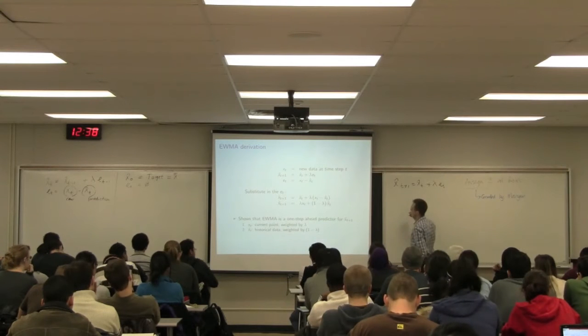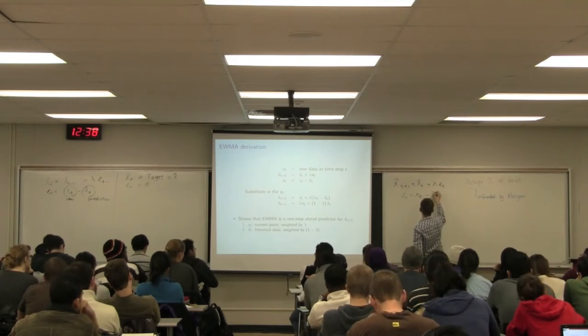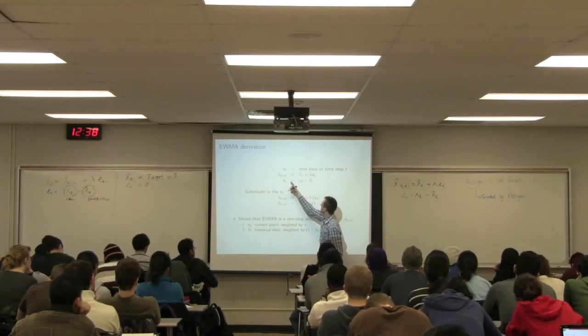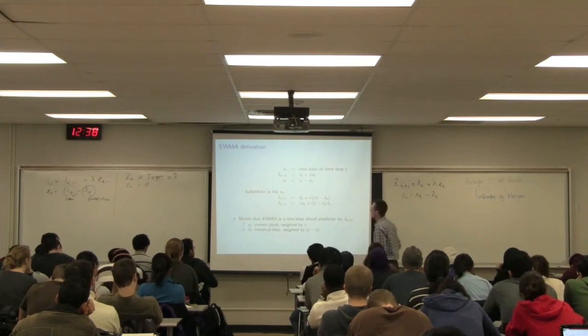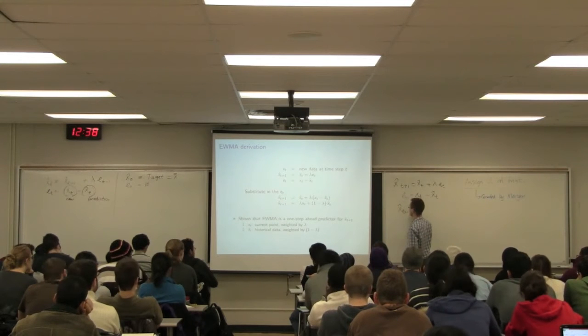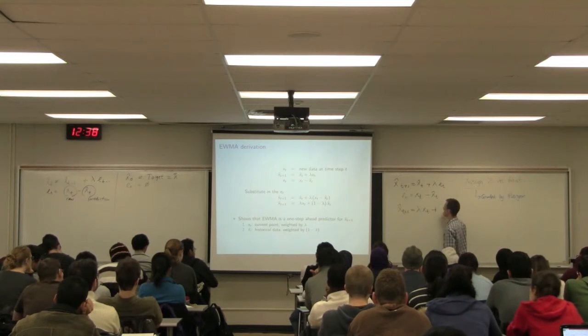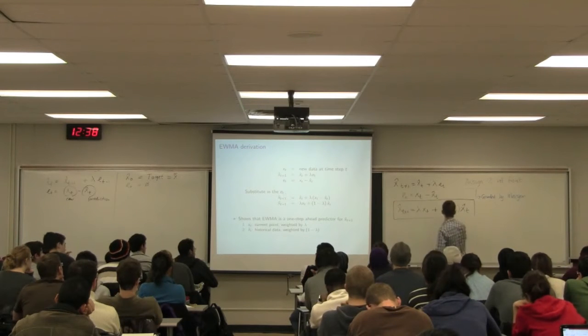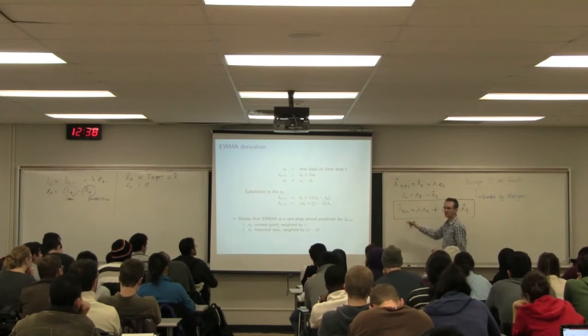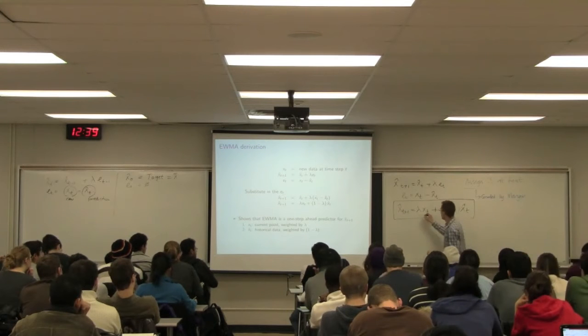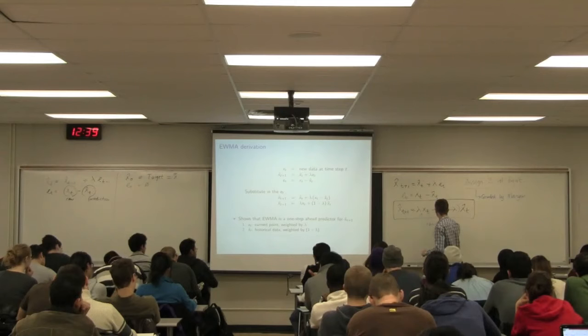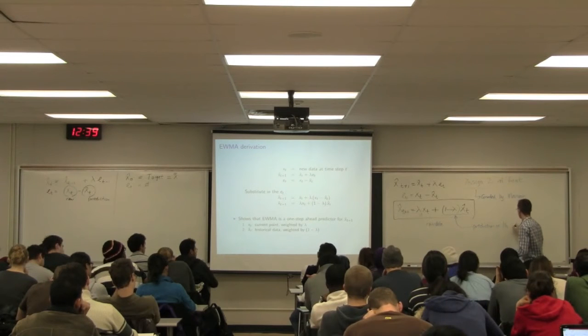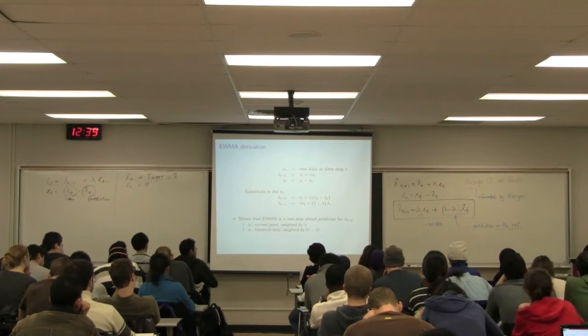So then my error et, let me sub that in. So et is equal to x of t minus x hat. Observed minus predicted, the standard definition of the error. So subbing the et, I will get the following relationship. So et is x of t minus x hat of t. Substitute that in and simplify. We get this very important formula over here. x hat t plus one is equal to lambda x of t plus one minus lambda x hat of t. And this is what I want to spend some time looking at. It says my prediction one step ahead in the future has got two components to it. It's got a component based on my raw data and it's got a component based on my predictions in the past, or historical data.